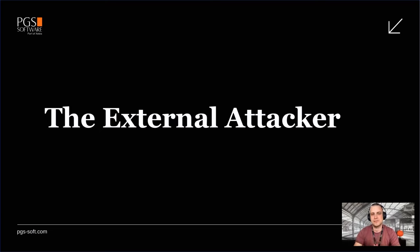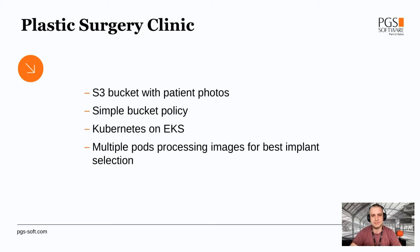Now we have the other way of attacking our resources — not the internal one but the external attacker. This is someone who doesn't know what we have, but is determined to get access to our resources. The second example is a plastic surgery clinic. They have S3 buckets used to store patients' photos for different reasons, and there's already a simple bucket policy allowing Kubernetes pods to access the bucket to extract these photos.